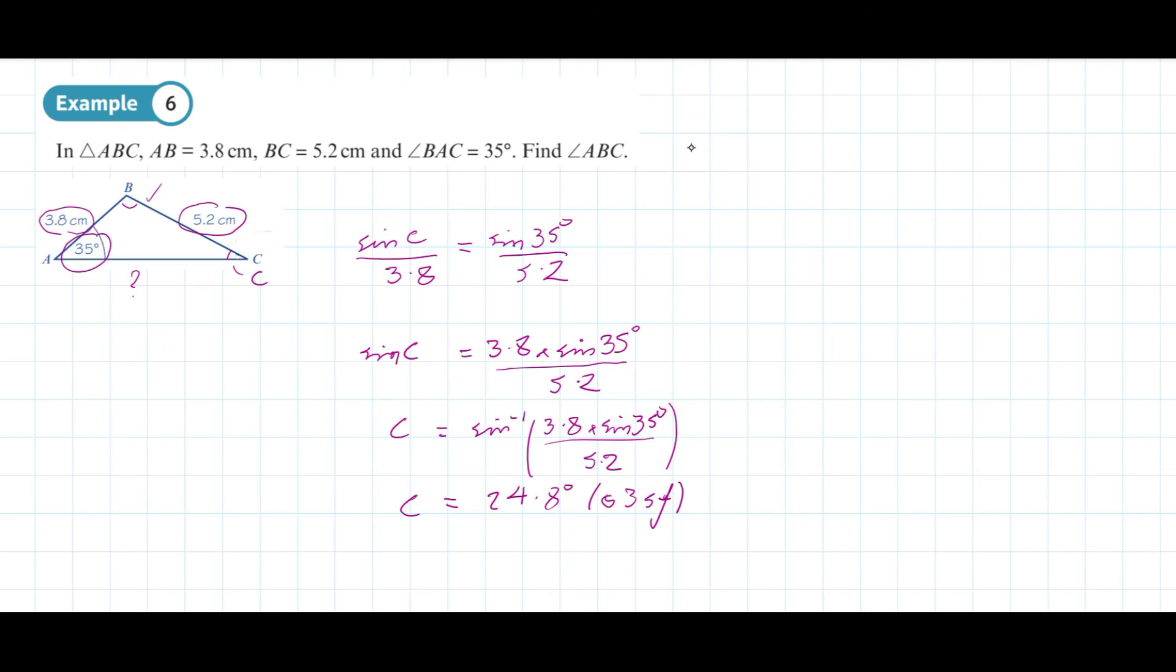Therefore angle ABC must be 180 degrees minus the sum of 24.8 degrees plus 35 degrees. When I do this on my calculator, I'm going to use the full digits of the 24.8, not the rounded answer, which will give us a final answer for angle ABC of 120 degrees to 3 significant figures.